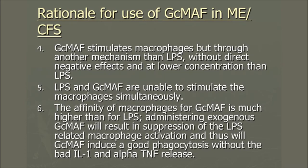GC-MAF stimulates macrophages through a different mechanism than LPS, without a direct negative effect at lower LPS concentrations. GC-MAF is in fact a stronger activator of macrophages than LPS, and it does so in a different way, without certain cytokine expressions. LPS and GC-MAF are unable to stimulate macrophages simultaneously — it's either LPS or GC-MAF. The affinity of macrophages for GC-MAF is much higher than for LPS. Administering exogenous GC-MAF will result in suppression of the LPS-related macrophage activation, and thus GC-MAF will induce good phagocytosis without the bad IL-1 and TNF-alpha release.